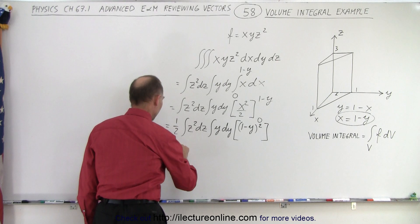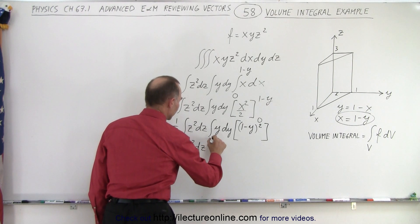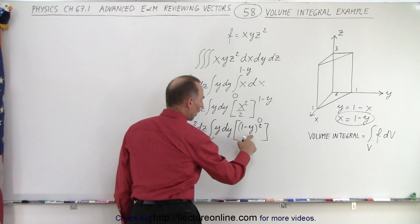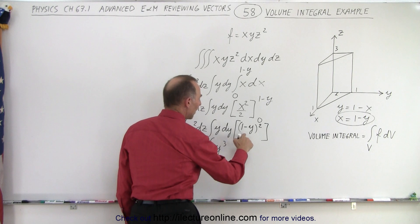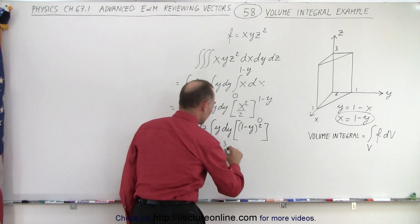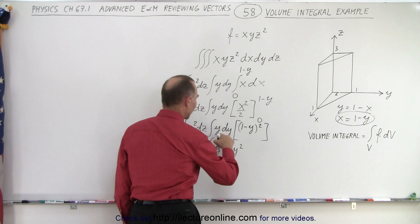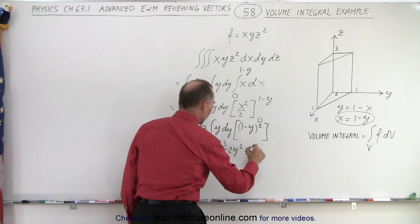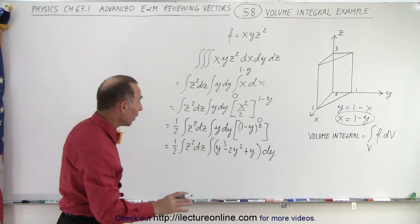And so we have 1 half times integral of z squared dz times the integral of, so here we get y squared times y, which gives us y cubed, minus 2y times y gives me minus 2y squared, and a plus 1 times y gives me plus y, and the whole thing times dy. And now we're ready to integrate over dy.